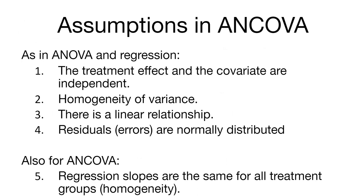Regarding the assumptions in the analysis of covariance, many are the same as for analysis of variance and regression. That is, the treatment effect and the covariate are independent — if we have one experimental treatment, it's independent from some covariate that we might also be measuring. We assume that the variance is the same across all values of x, that there's a linear relationship between x and y, and that the residuals or errors from our model are normally distributed.